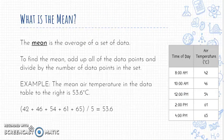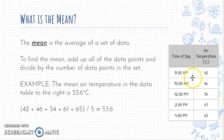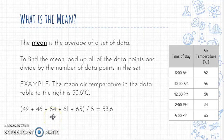We also need to analyze what the numbers mean using math tools beyond graphs and data tables. The mean is one useful tool — it's the average of a set of data. To find the mean, add up all of the data points — for example, 42 plus 46 plus 54 — and divide by the number of data points in the set. In this case, there were five numbers, so divide by five to get the mean air temperature.